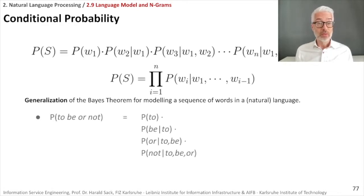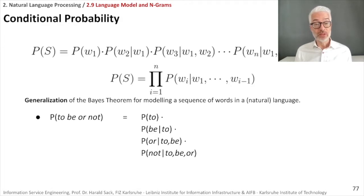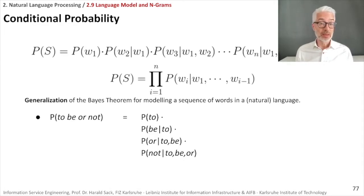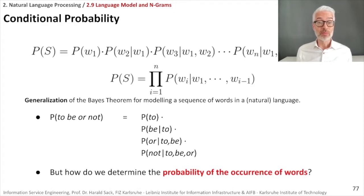By that, we could say the probability of 'to be or not' equals the probability of 'to', times the probability of 'be' given 'to', and so on. The question we left from the last part of the lecture was: how do we actually determine the probability of these words? Where does the probability come from?